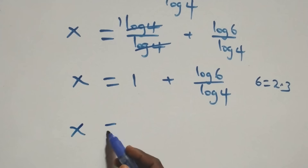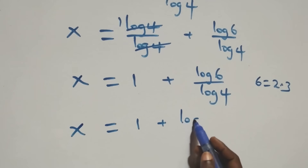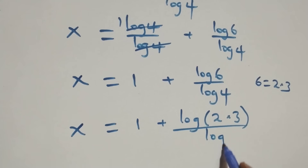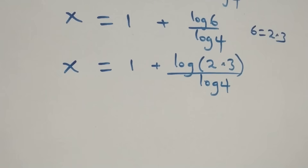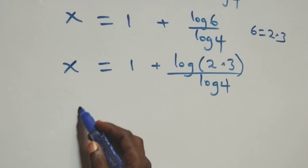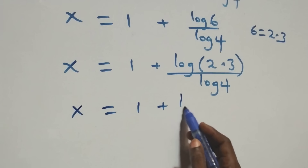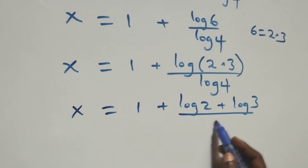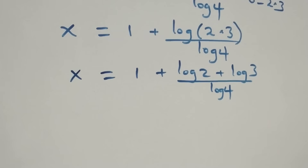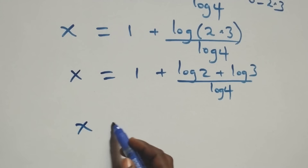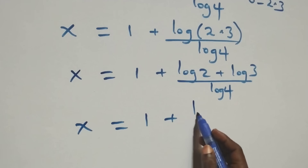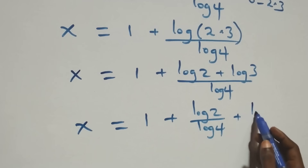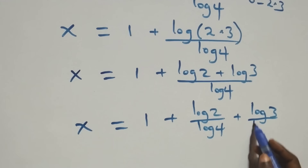We can also write 6 as 2 times 3, which implies x equals to 1 plus log of 2 times 3 over log 4. We apply the product rule of logarithms and we have x equals to 1 plus log 2 plus log 3 over log 4. Separating into two fractions: x equals to 1 plus log 2 over log 4 plus log 3 over log 4.